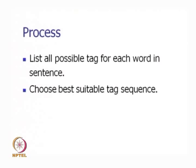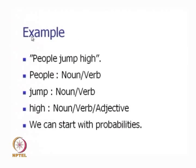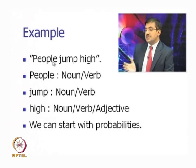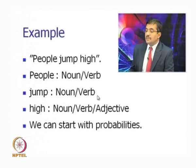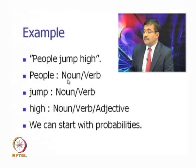The process of part of speech tagging is: list all possible tags for each word in the sentence, then choose the best suitable tag sequence. Here is an example: the sentence 'People jump high.' People can be both noun and verb; jump can be noun and verb; high can be noun, verb, or adjective. This needs some explanation to show how people, jump, and high can have these multiple tags.